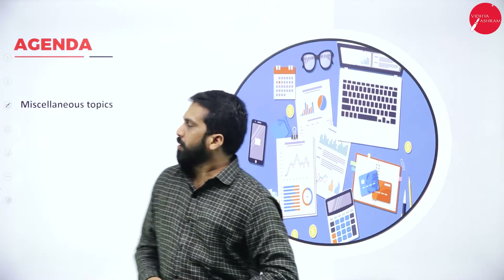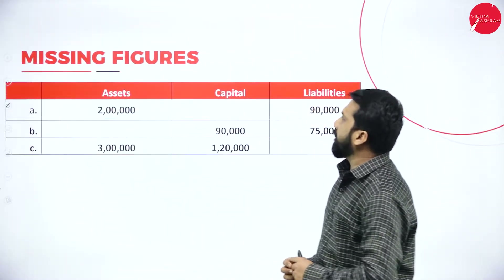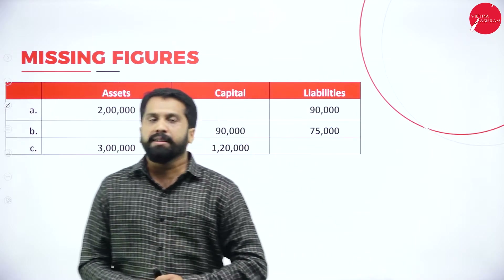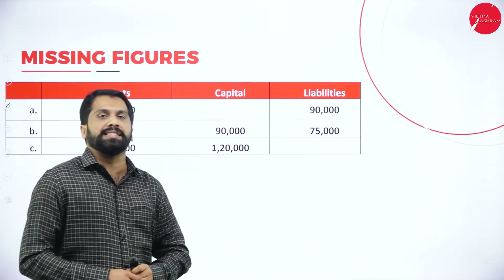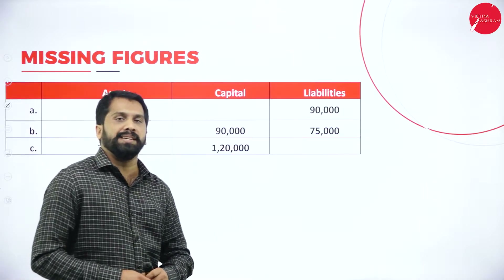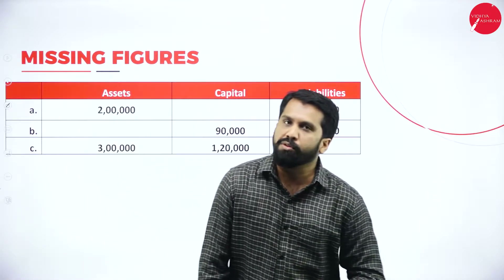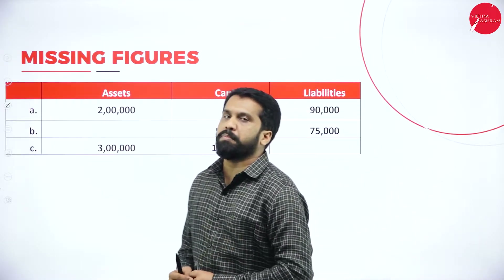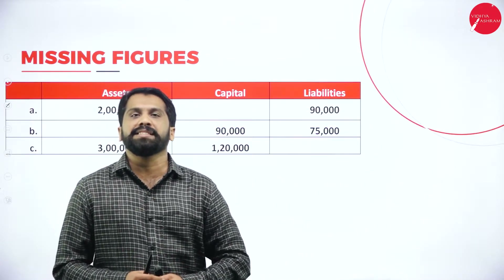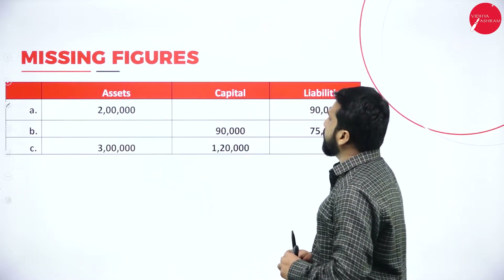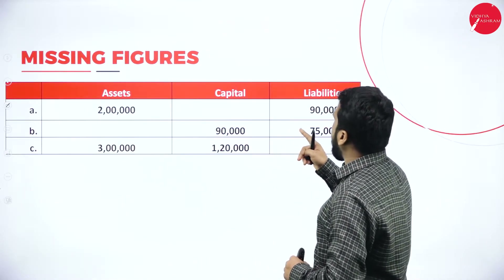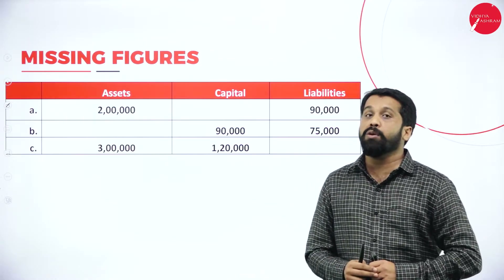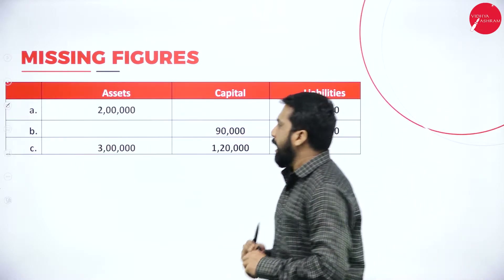Your first topic will be the missing figure. This is a five mark question. Once or twice they have asked you to find out the missing figure. Now, if you have a commerce background from your first year PUC, maybe you have already done this. In this, it is very simple — you have asset, capital, and liability. How to find out? I'll give you the logic.